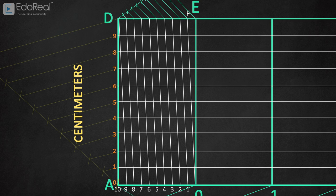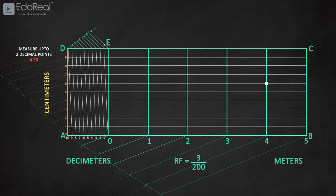Now with diagonal scale, we can measure up to 2 decimal points, that is 4.56. To do that, first draw a line from 0 to 4 meters in the scale, that is 4 meters as shown.